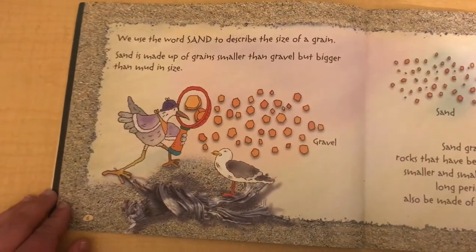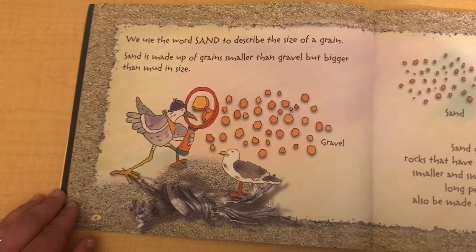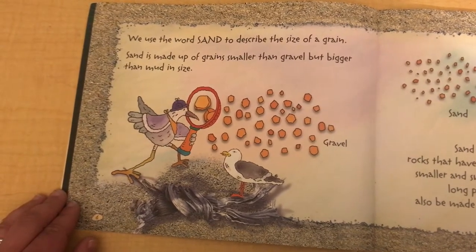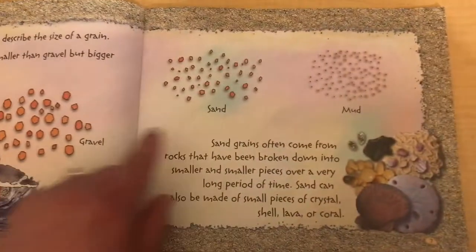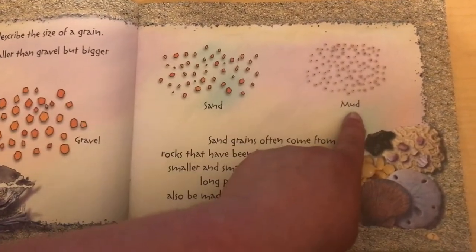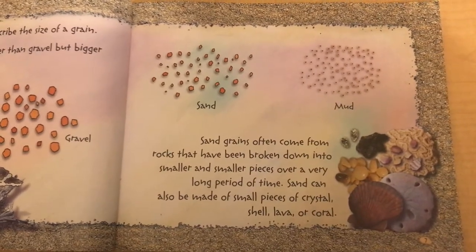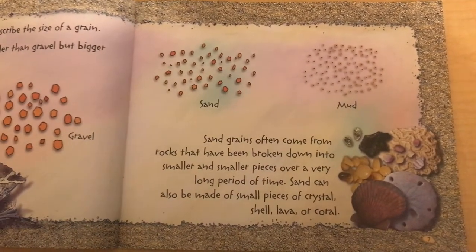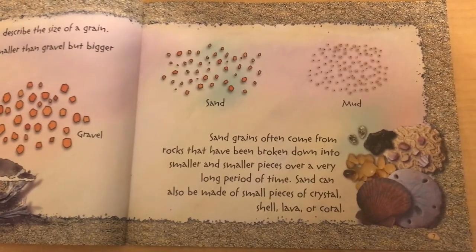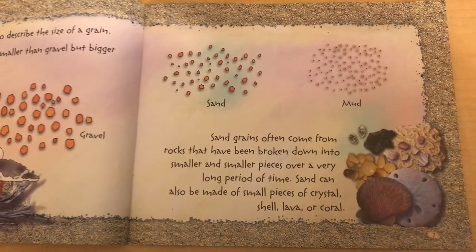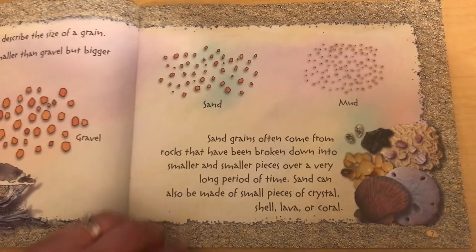We use the word sand to describe the size of a grain. Sand is made up of grains smaller than gravel but bigger than mud in size. Sand grains often come from rocks that have been broken down into smaller and smaller pieces over a very long period of time. Sand can also be made of small pieces of crystal, shell, lava, or coral.